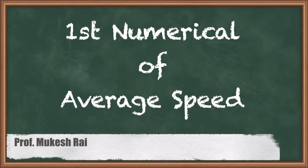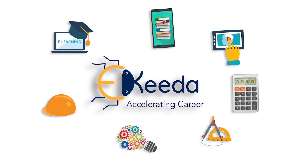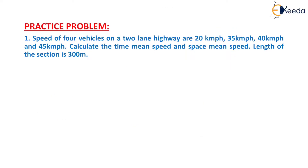Hello students, today we are going to solve the first numerical on average speed. The question is given as: the speeds of 4 vehicles on a 2-lane highway are 20 km per hour, 35 km per hour, 40 km per hour, and 45 km per hour. Calculate the time mean speed and space mean speed. The length of the section is 300 meters.